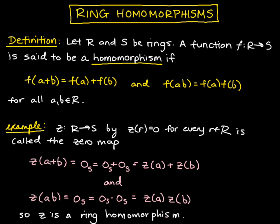One thing to note is that if R and S both contain non-zero elements, then the zero map isn't injective or surjective. But the purpose here is just to show that it's a homomorphism.